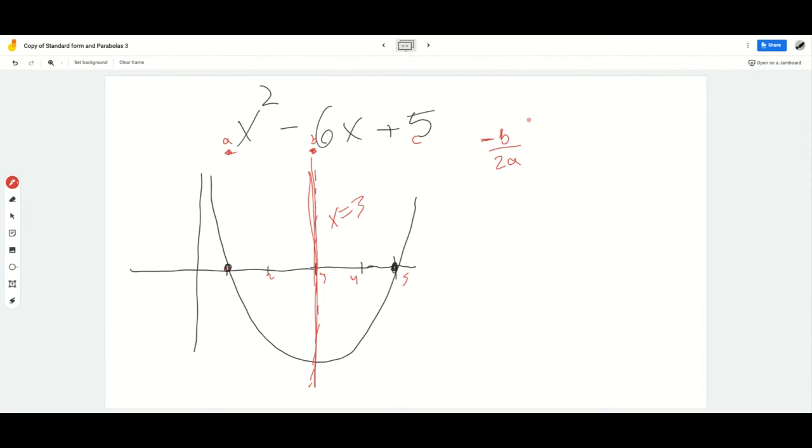This formula is given on the formula packet. So b is negative 6, so negative negative 6. Put that in for b: negative negative 6 over 2a, where a is 1, which equals - I have two negatives here, that makes it a positive 6 over 2, which equals 3. So x equals 3 is my axis of symmetry.